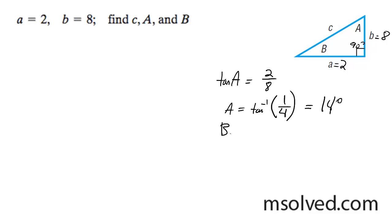For angle B, I'm going to take tangent of B equals 8 over 2, so B equals the inverse tangent of 4 over 2, and from there we get B equals 76 degrees.